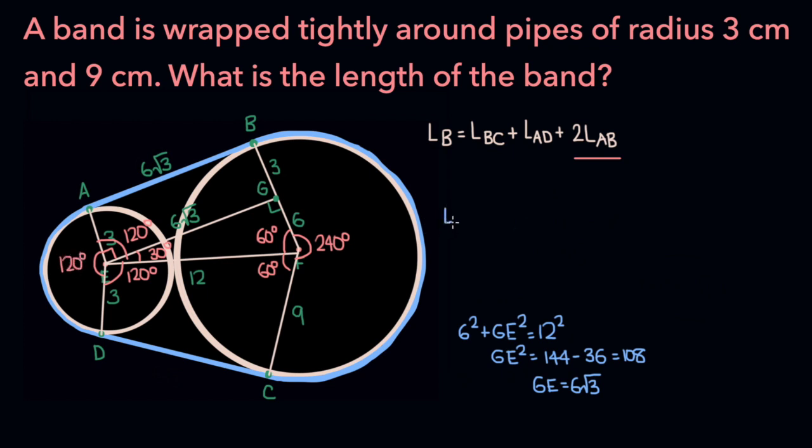The length of arc BC is going to be the circumference of the circle times the angle of the arc over 360, where theta is the central angle for that arc. The radius of the large pipe is 9, so it's going to be 2 pi times 9, which is 18 pi times